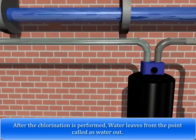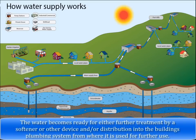After chlorination is performed, water leaves from the point called water out. The water becomes ready for either further treatment by a softener or other device, or distribution into the building's plumbing system for further use.